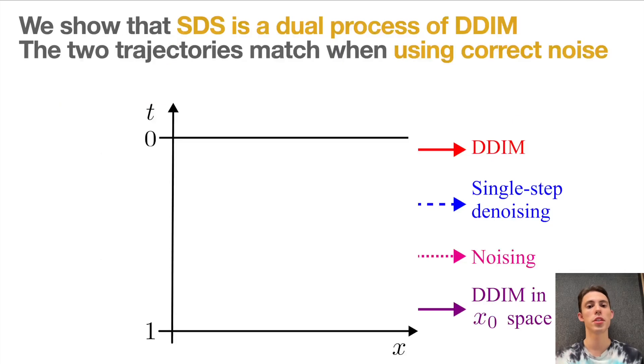In our work, we suggest a new perspective onto the update rule. For this, let's consider an update step of DDIM, one of the most popular 2D sampling algorithms.